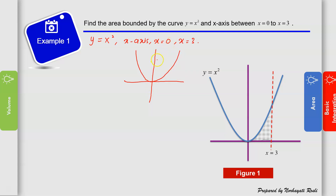When x = 0, we are at the origin, and x = 3 is located further along. The area bounded by the curve y = x², bounded by x = 0 and x = 3, and the x-axis, is given by the shaded region below the parabola.